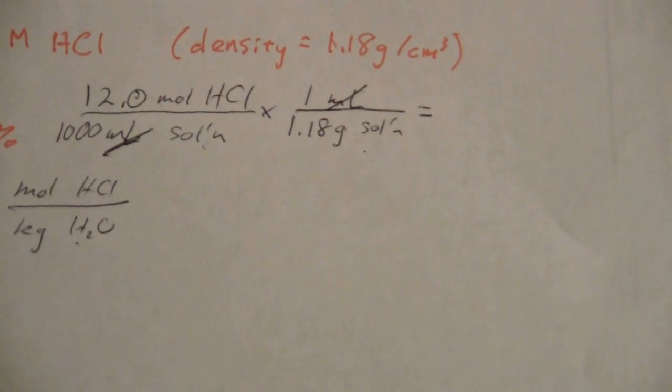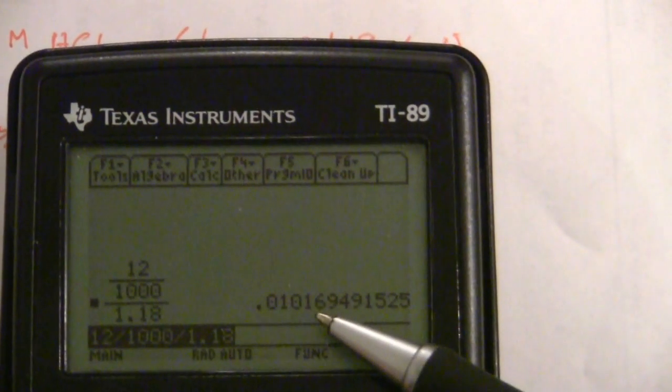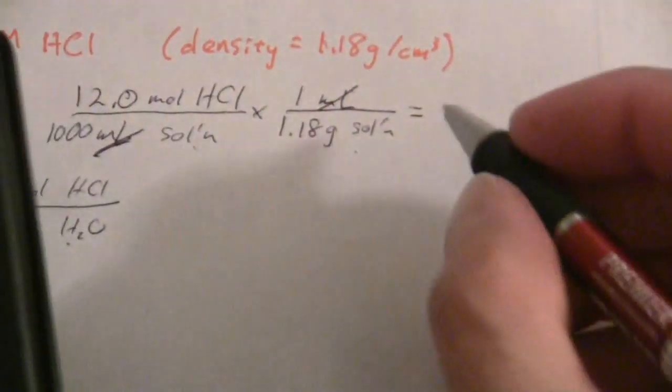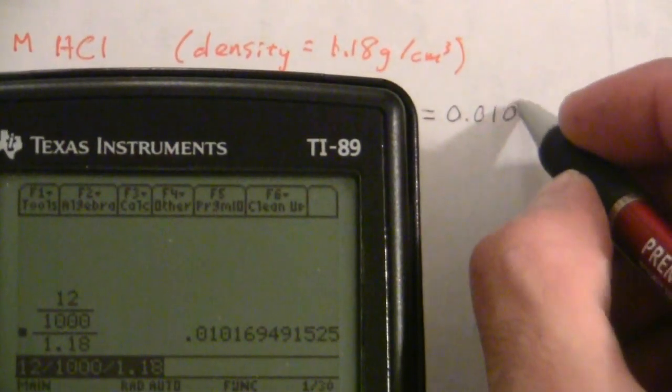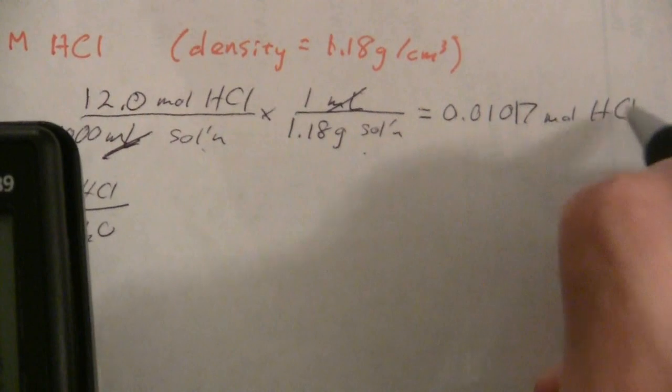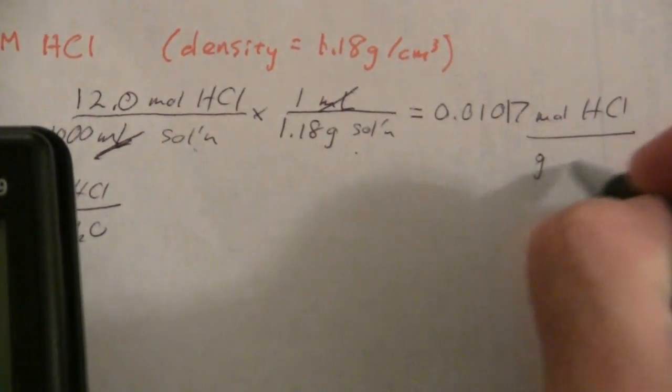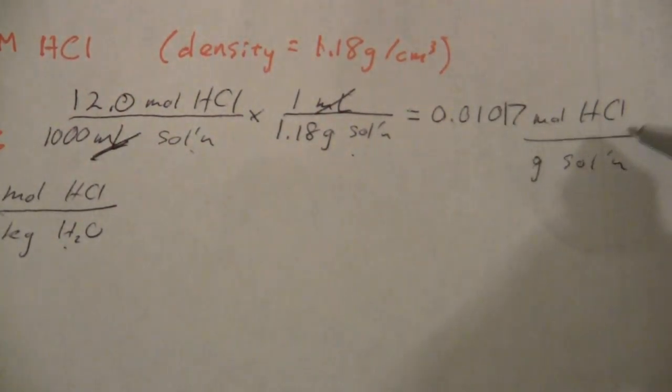And when I do that, let me grab my calculator here, and so what we get here is 12 molar divided by a thousand divided by 1.18 and I have 0.010, and I'll say just 0.01017. And that's moles of HCl per gram of solution. So that means in every gram of the solution I have this many moles of HCl.